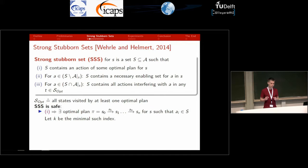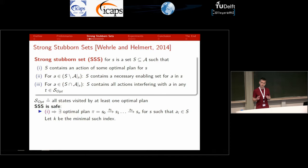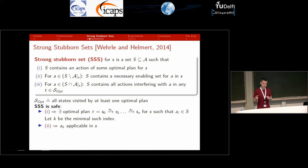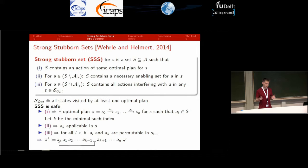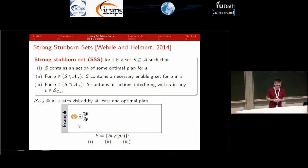I'll now briefly go over the main proof arguments, which will become important later on. Condition one implies directly that there is an optimal plan sharing an action with the strong stubborn set. Consider the first action AK in this plan also contained in the stubborn set. If AK were not applicable in the state, condition two would imply there is another stubborn set action appearing before AK — but by minimality, no such action can exist, so AK must be applicable. Similarly, by minimality and condition three, AK cannot interfere with any of its preceding actions, meaning we can move AK to the front. We now have an optimal plan starting with an action in the strong stubborn set, confirming it gives a safe pruning function.